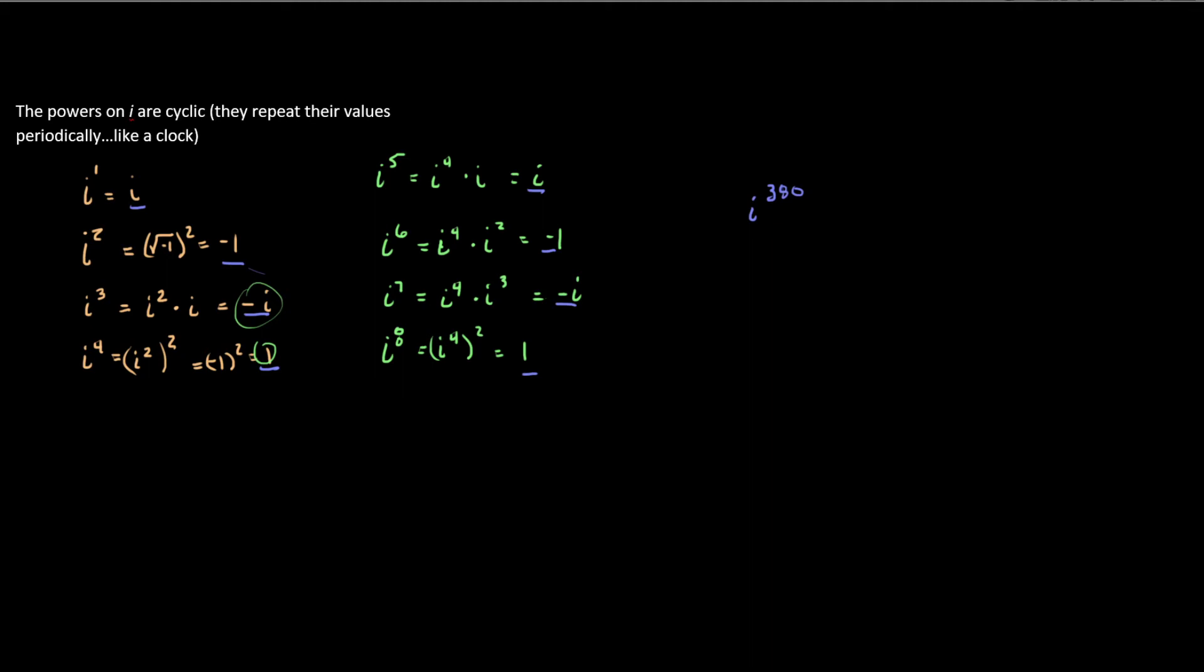Or we're just wrong, one of the two. So if I see this, it repeats itself every 4. And if you notice, if I were to look at these powers as perhaps a remainder. So like if I were to take 5 and divide it by 4, I get a remainder of 1, which i to the 5th looks like i to the 1st. If I take 6 and divide it by 4, I get a remainder of 2, and that looks like i squared. If I divide 7 by 4, I get a remainder of 3. That looks like i cubed. If I have 8 and divide it by 4, I get 2 with no remainder. Anything raised to the 0 power is 1.